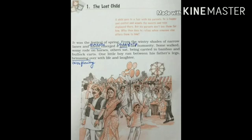Let's begin the story now — The Lost Child. The whole story revolves around a little boy who goes to a fair with his parents and gets lost there. I am going to explain this chapter in three parts. Part 1: the child goes to a spring fair with his parents.